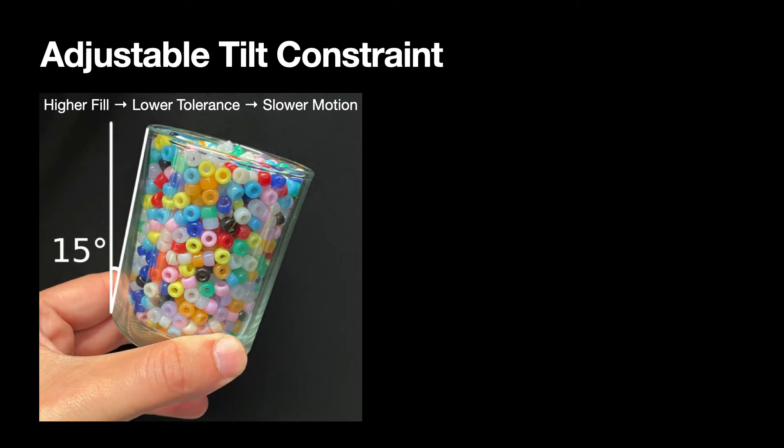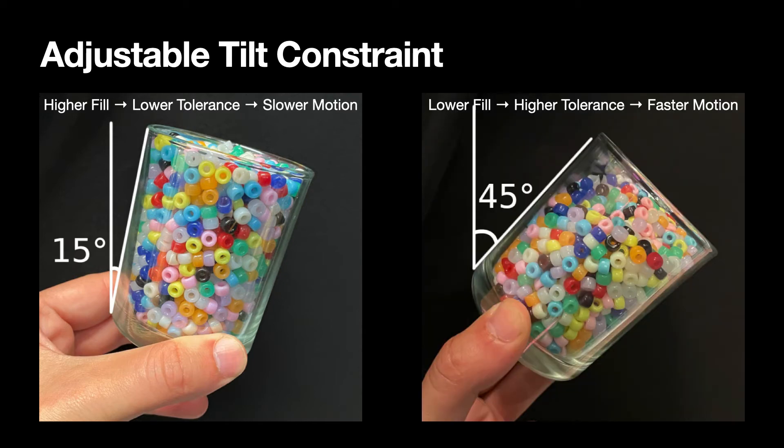Depending on the fill level, we can relax or tighten this constraint. For example, while a near-full container needed to be moved slowly, a part-way full container can be moved much faster.